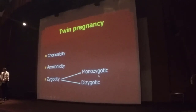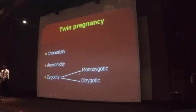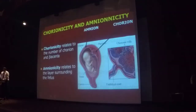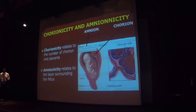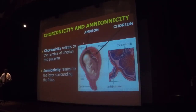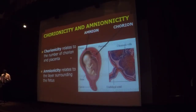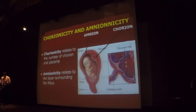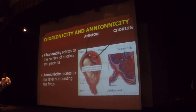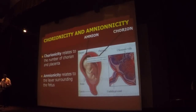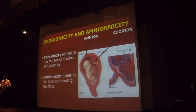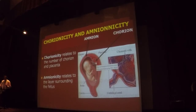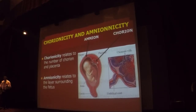Zygosity can be monozygotic or dizygotic. Chorionicity refers to the number of chorions and placentas. Amnionicity relates to the layers surrounding the fetus. For chorionicity, it basically means the number of placentas. The twins may share a placenta, in which case it becomes a monochorionic twin. If they each have their own placenta, they are dichorionic.